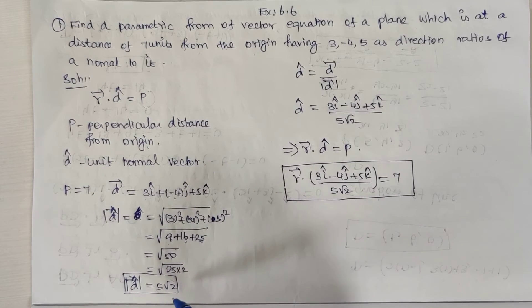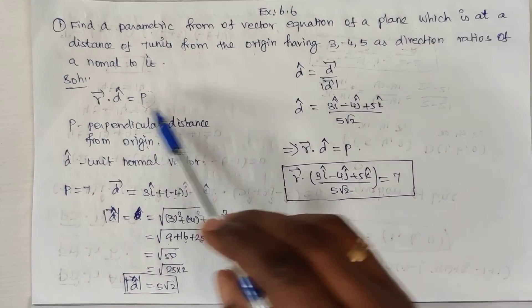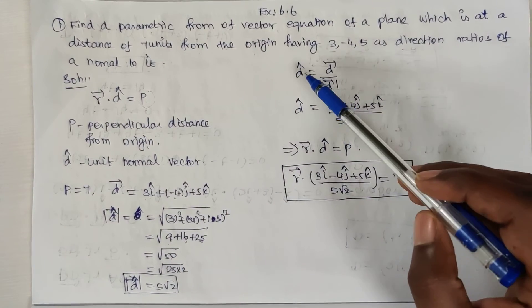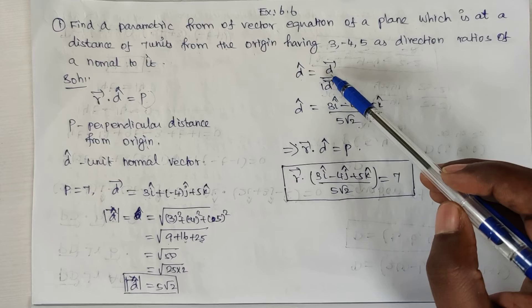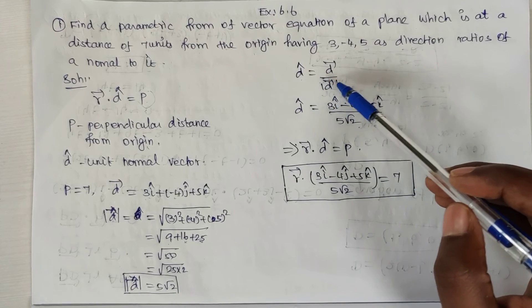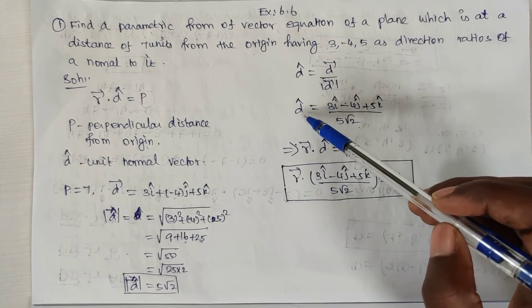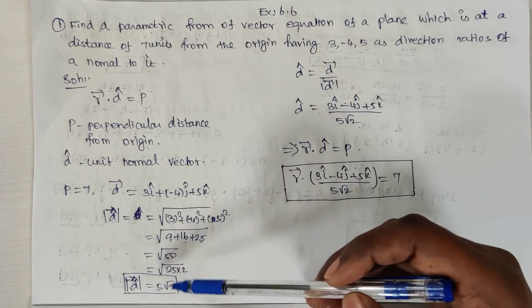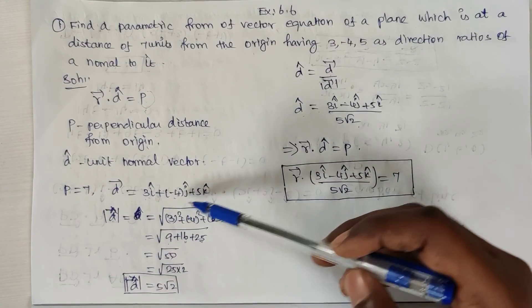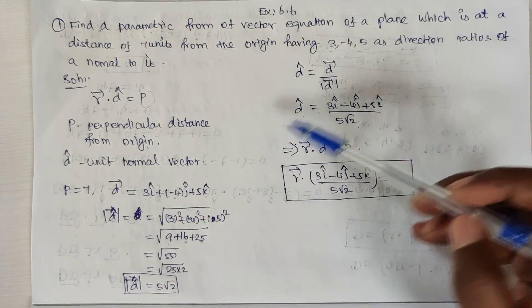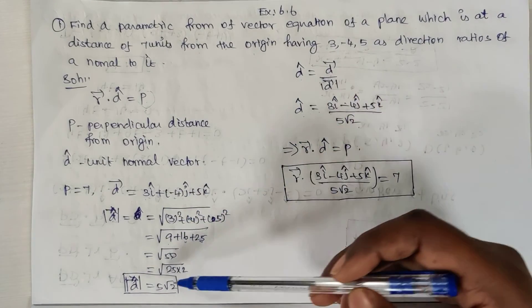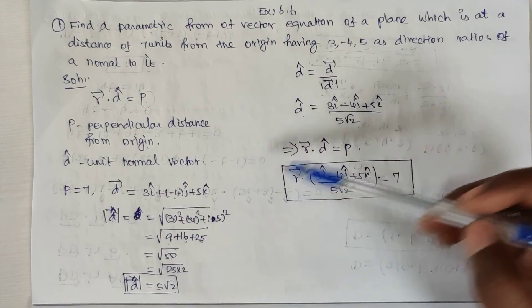Since d̂ is the unit normal vector, d̂ = d⃗ / |d⃗|. So d̂ = (3î - 4ĵ + 5k̂) / 5√2.